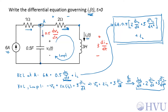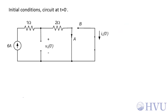Now let me find initial and final conditions. Initial conditions are based on the fact that capacitor voltages and inductor currents cannot change instantaneously. Looking at the circuit at t equals 0 minus — just before the switch moves from position A to position B — if the switch has been in position A for a long time, the forcing function is constant, so everything is constant. The capacitor looks like an open circuit, so there is no current through the capacitor, and the inductor looks like a short circuit, so there is no voltage across the inductor. By KCL, 6 amps flows through the 2 ohm resistor.